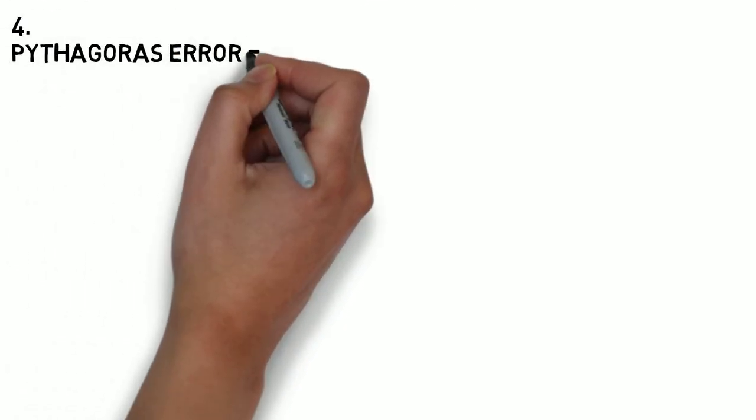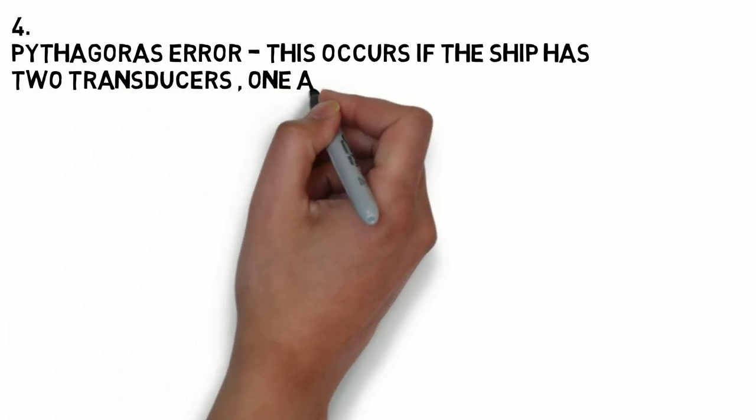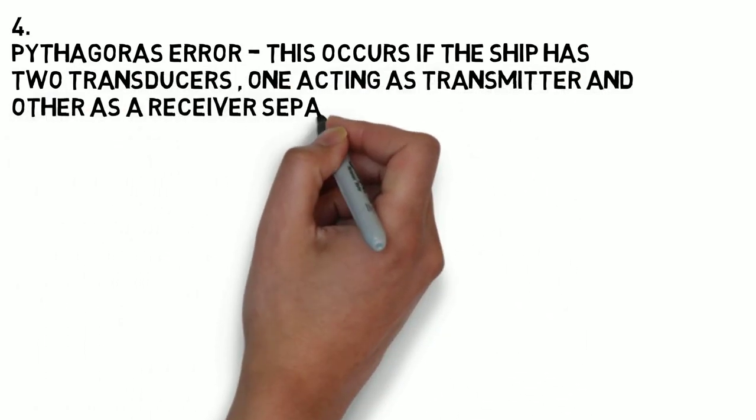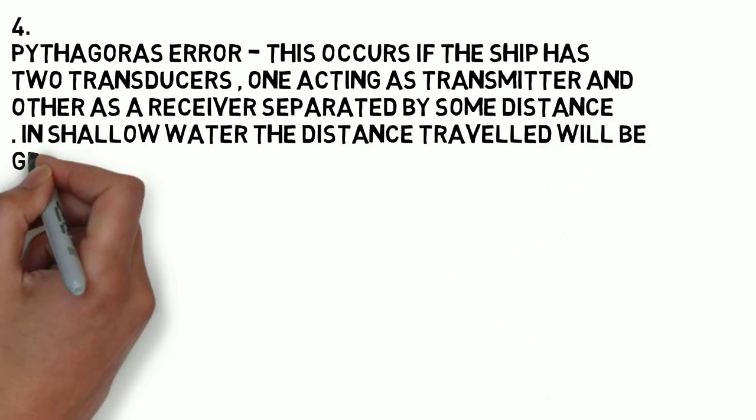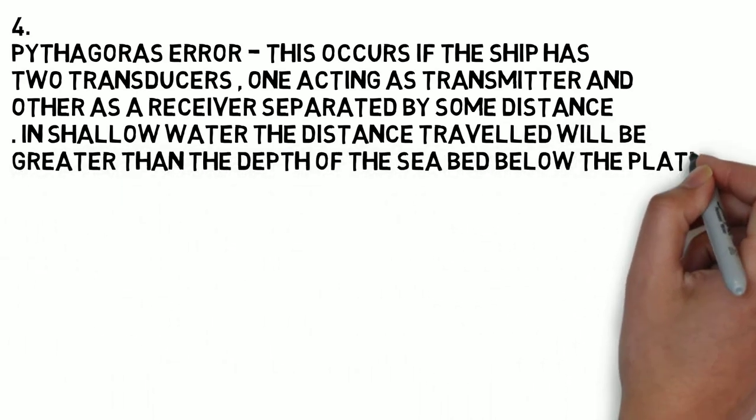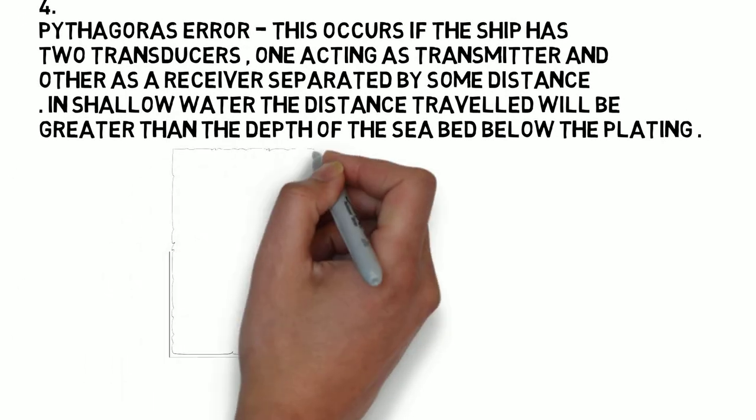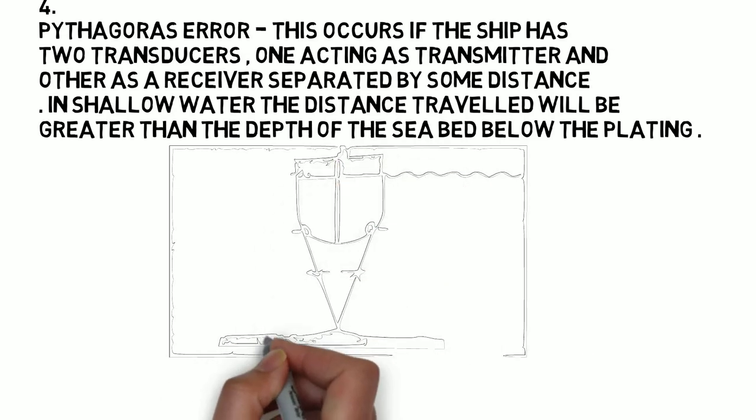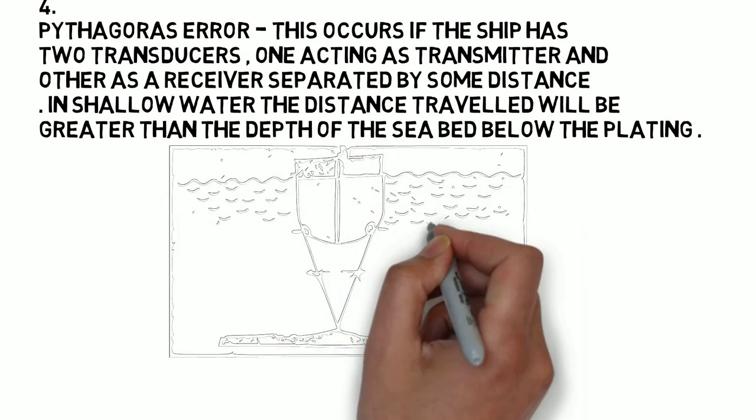This occurs if the ship has two transducers, one acting as a transmitter and other acting as a receiver, and they both are separated by some distance. In shallow water, the distance traveled by the pulse will be greater than the depth of the seabed below the plating.